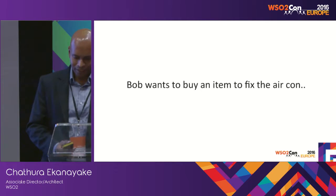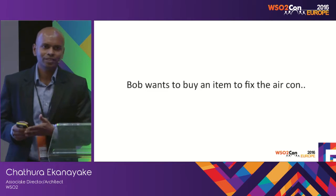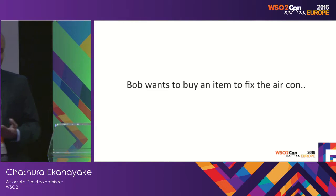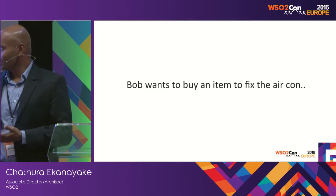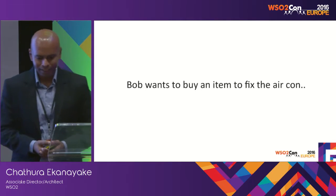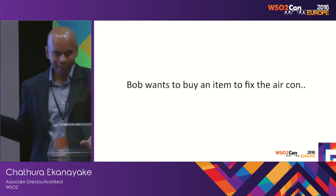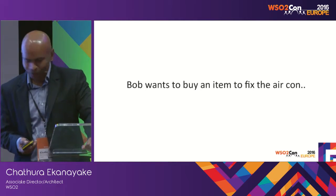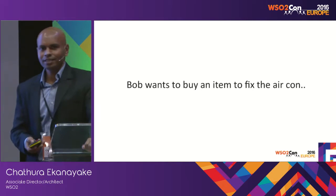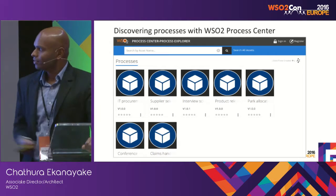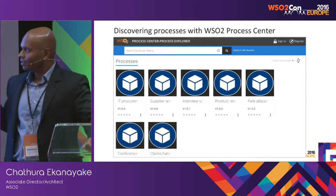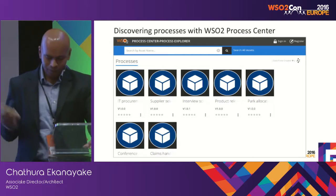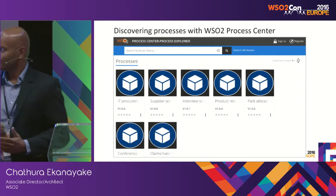Once processes are published, it comes to the other part — the normal employees of the organisation. There are receptionists, maintenance people, cooks, electricians, and many employees in the hotel. Coming back to our example of fixing the broken air conditioner: Bob is one of our maintenance people. He wants to buy an item to fix the air conditioner. What he does is log into the Process Centre. This is the other part of the Process Centre — a process discovery section called the Process Explorer. He logs into the Process Explorer and it displays all processes that are authorised for him.